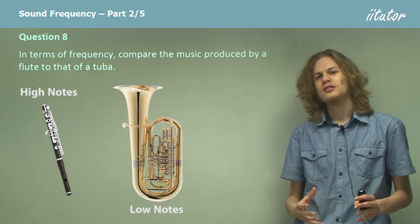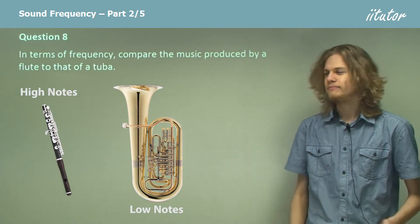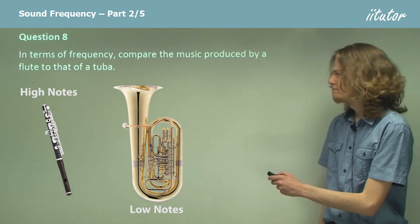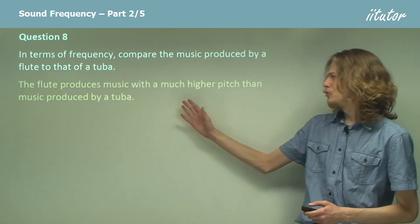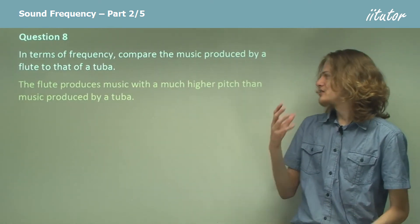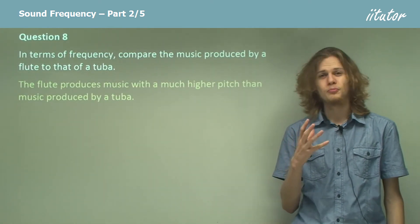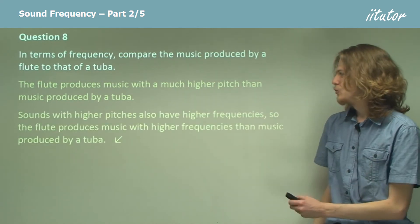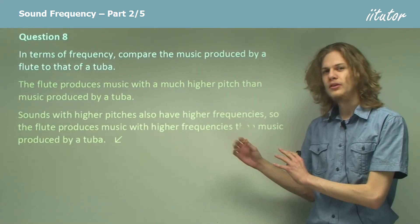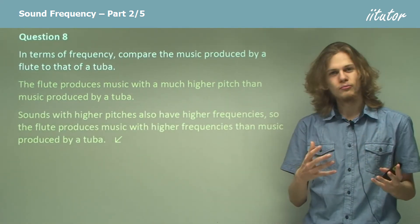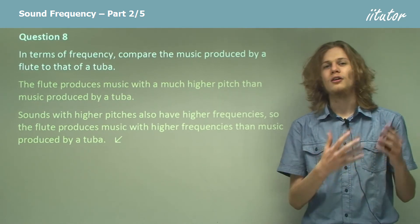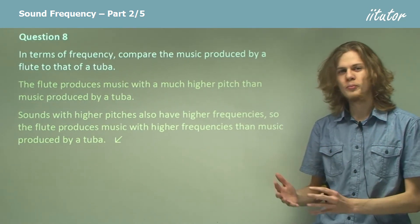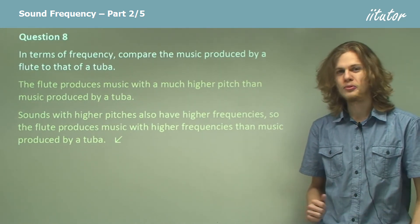The flute produces music with a much higher pitch than music produced by a tuba, which means that the flute, having a higher pitch, also has a higher frequency than the tuba, which has a lower pitch and a lower frequency.